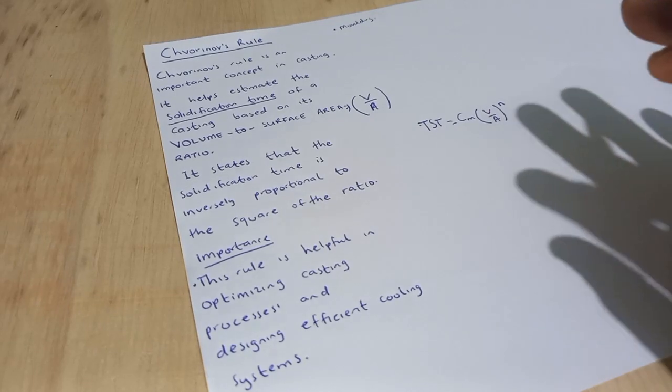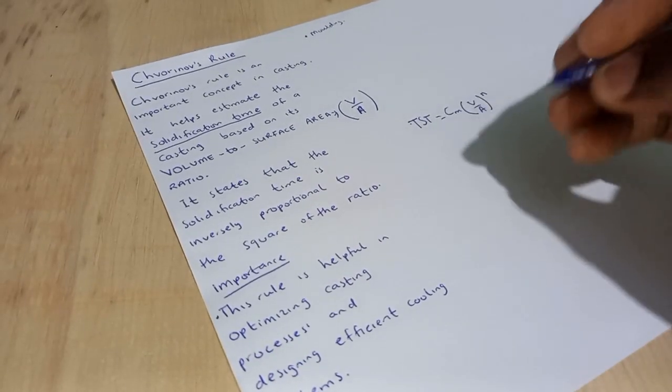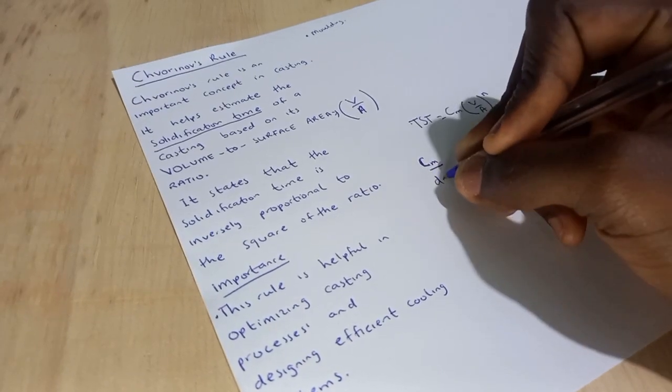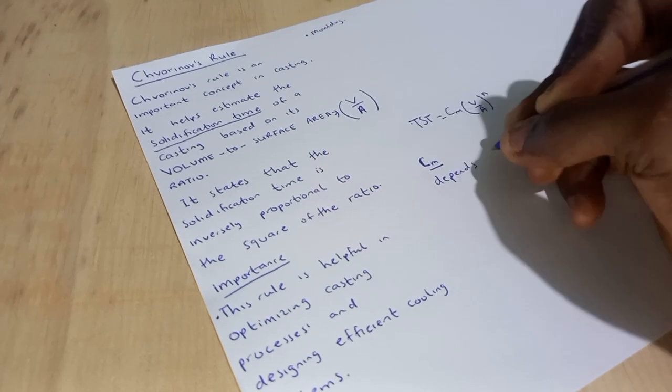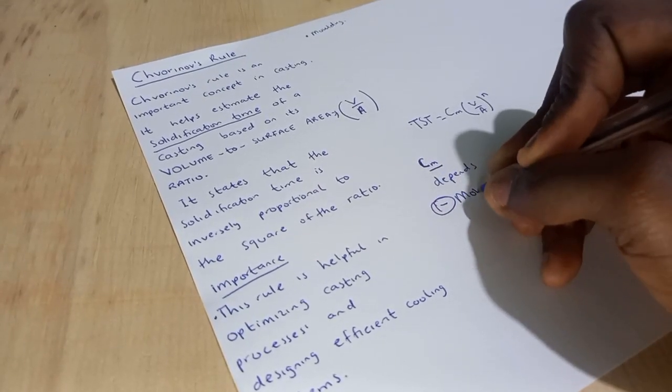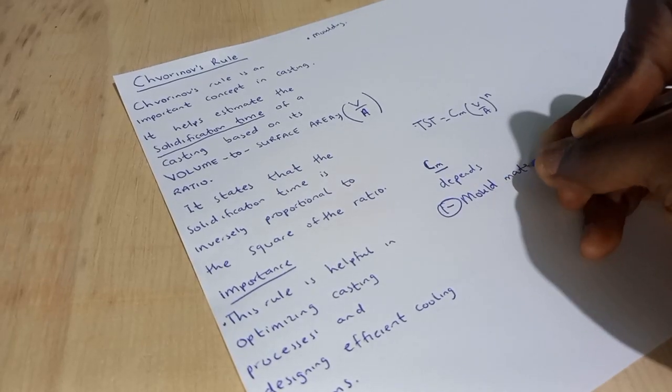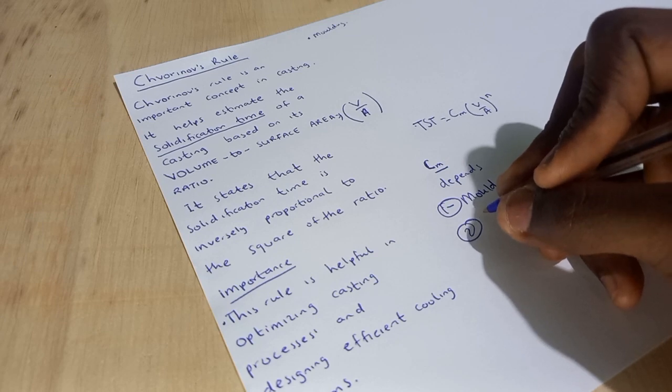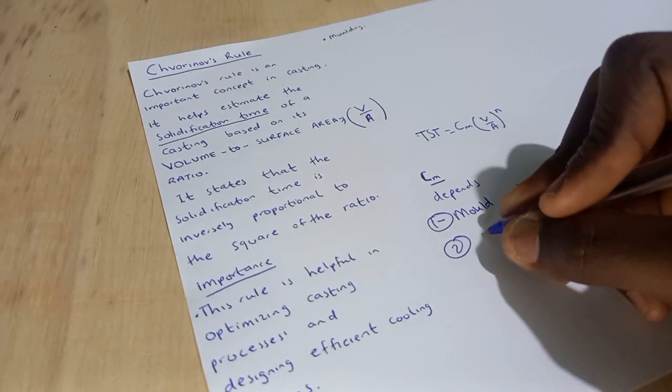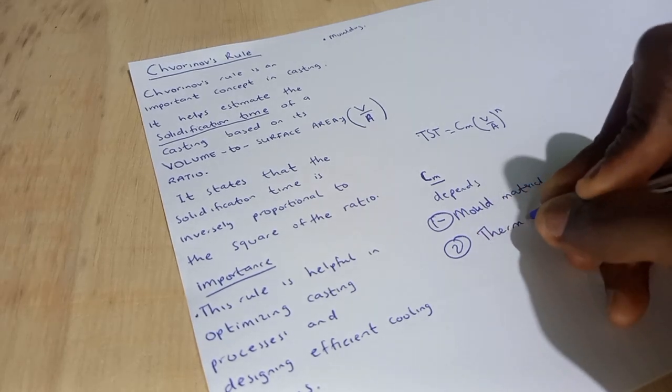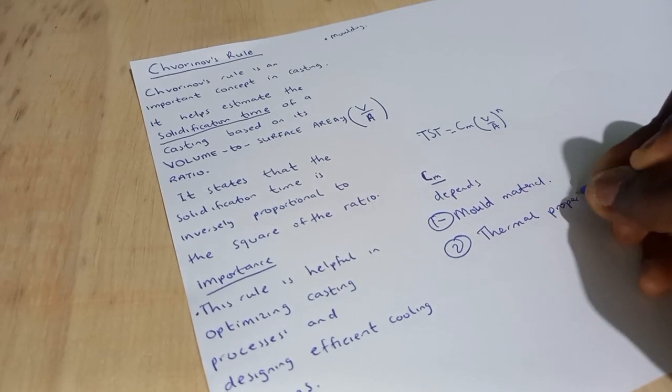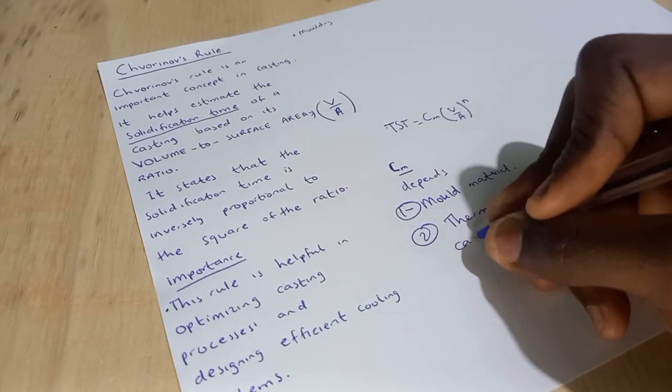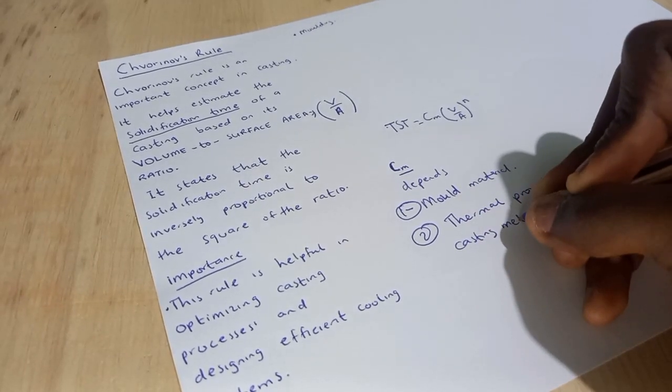You must know that in the Chvorinov's rule, we have the mold constant which depends on one: the mold material. Two: the thermal properties of casting material, of casting metal.